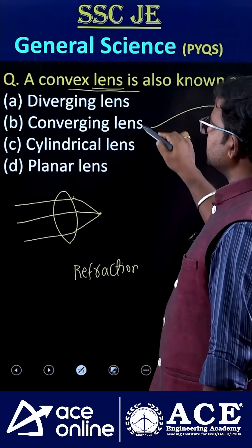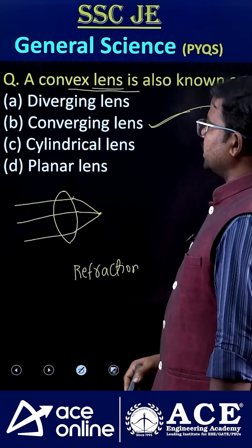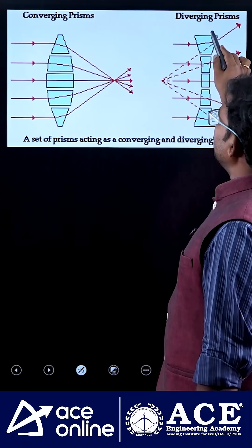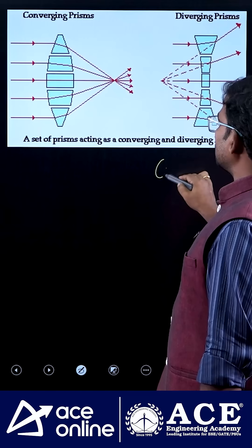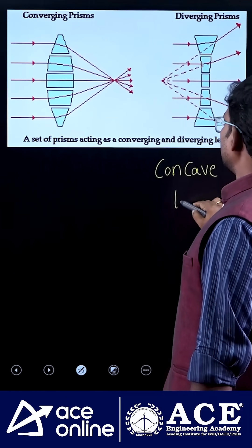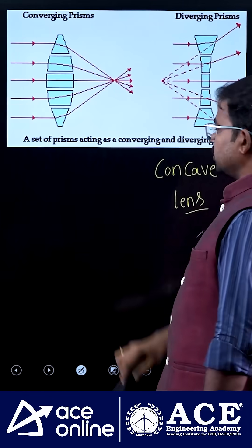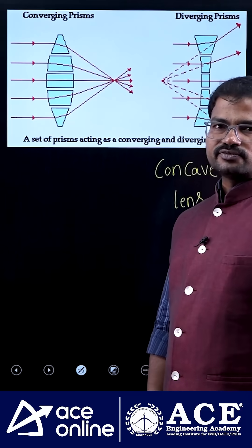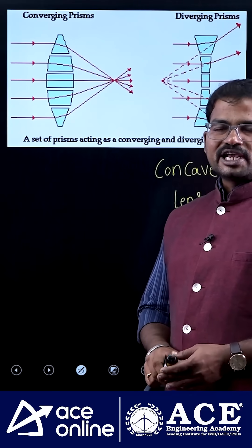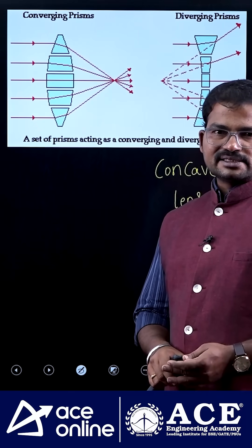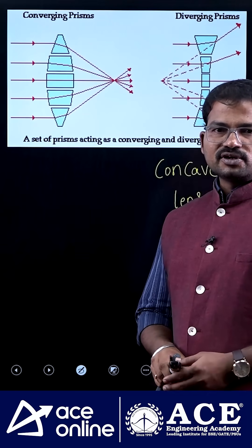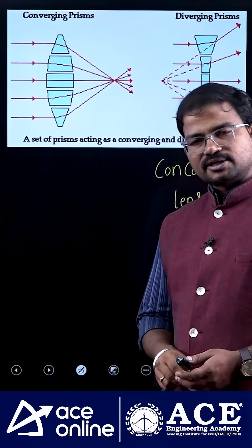That is why convex lenses are also called converging lenses. As for diverging lenses, those are nothing but concave lenses. Now I have a question for you: what is the optical power of a convex lens — is it positive or negative? If you know the answer, please comment. Thank you.